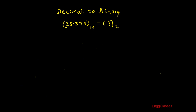Hello everyone! Welcome to Engineering Classes YouTube channel for a video lecture series in number systems. In this video lecture we shall consider the concept of decimal to binary number conversion. The given number in decimal is 25.375 and I need to find its equivalent in binary. So without wasting much time let's get into the concept straight away.